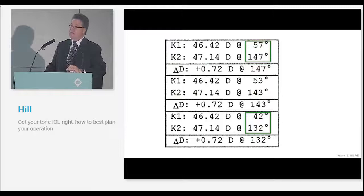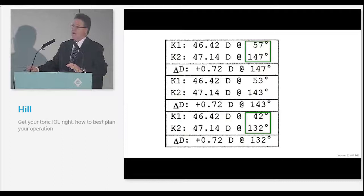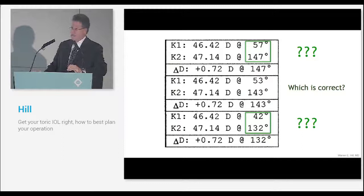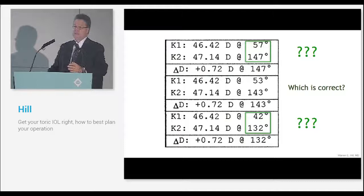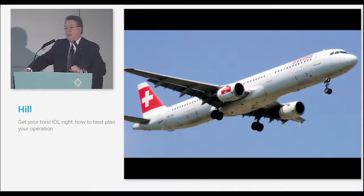Here at the meridian, the steep meridian is different. The question again comes up, how do you know which one is right? Because if you're off by 10 degrees, that's a 33% diminution in the torricity correction. So if you have a T7, that's a one diopter error just built right in.